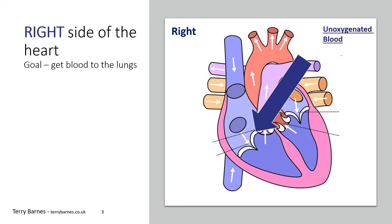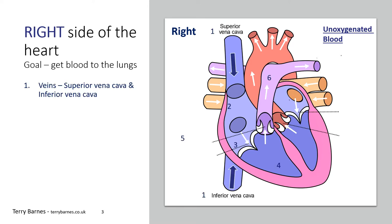So this unoxygenated blood that enters into the right side of the heart gives the heart a goal — the goal for the right side is to get the blood to the lungs. This blood returning to the body has very little oxygen left; it went out full of oxygen, did its job, and is now returning with very little. The blood returns to the right side via the superior vena cava from any part of the body above the heart, and below the heart via the inferior vena cava.